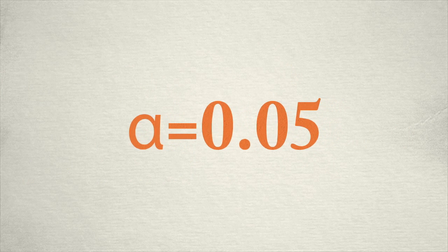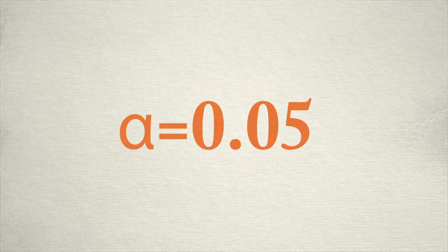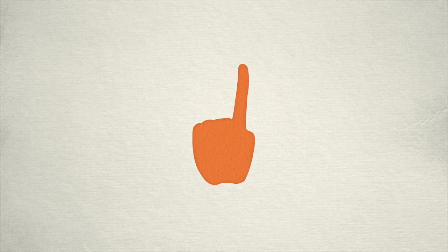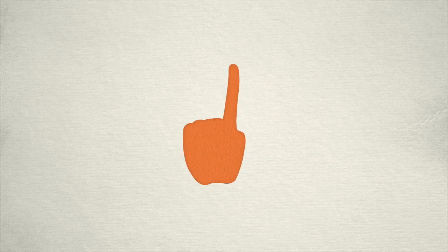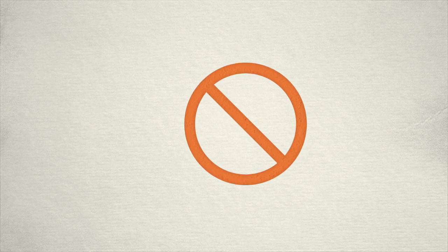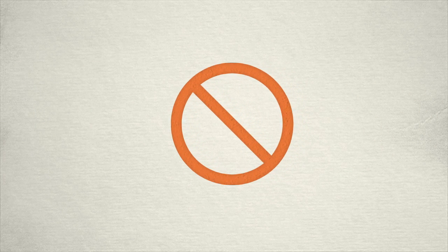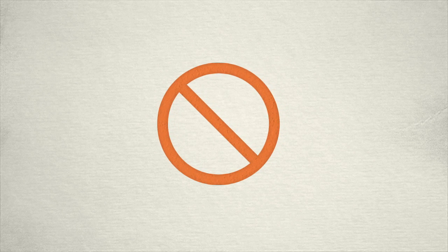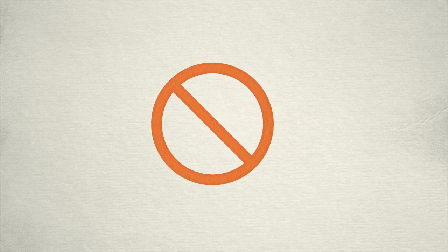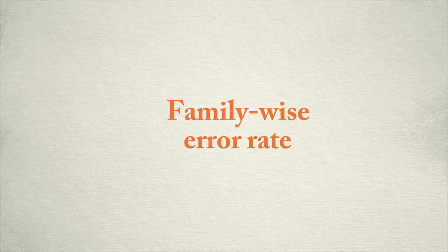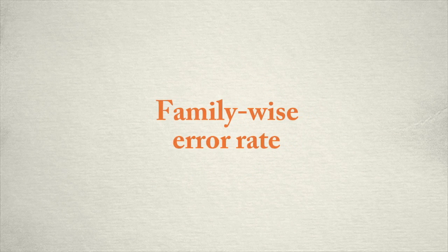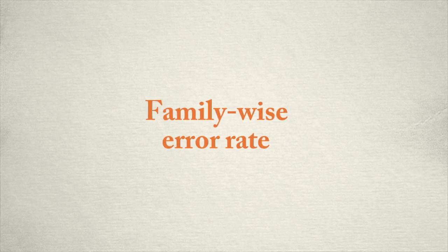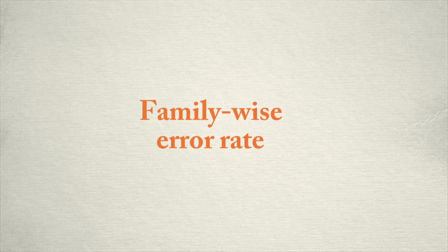Many statistical tests use an alpha level of 0.05 as their level of significance. It is critically important to understand that that is the level of significance for only one test. You cannot run multiple tests, each at an alpha level of 0.05, then claim that significant effects were only 5% likely to be due to chance. Each of those analyses has an alpha level of 0.05, but when you step back and look at all of the analyses, the family-wise error rate, as it's called, is actually much higher.